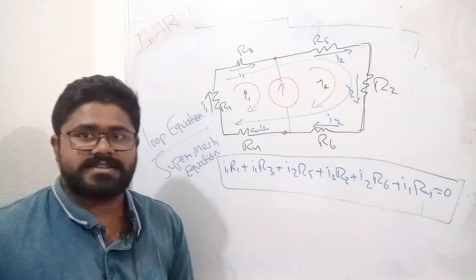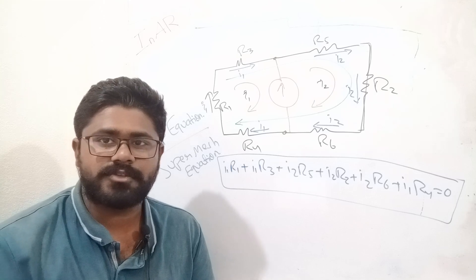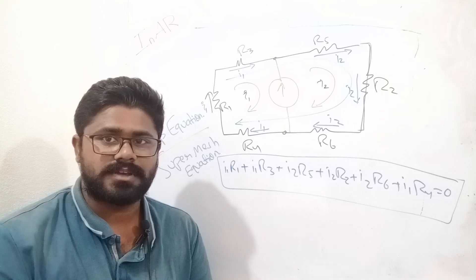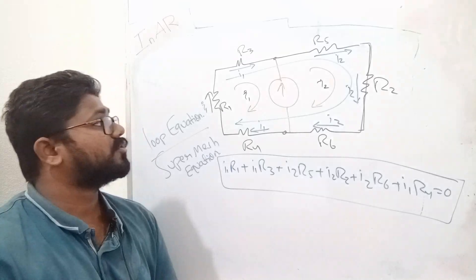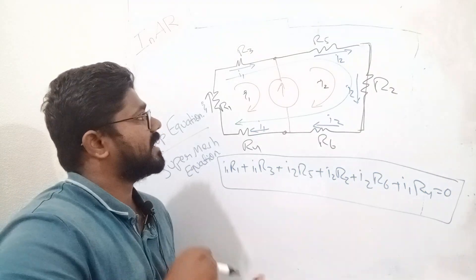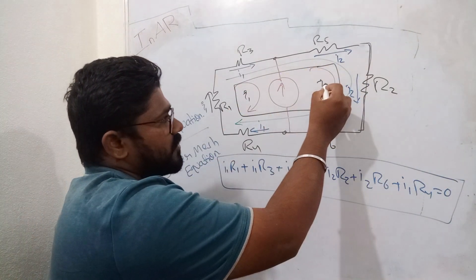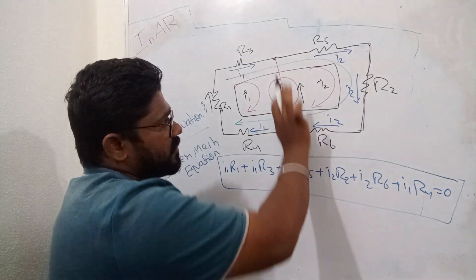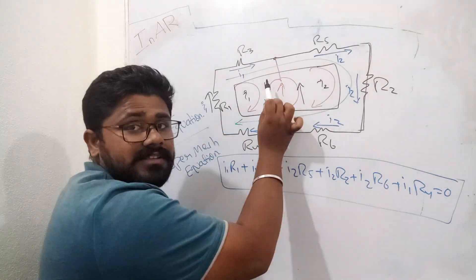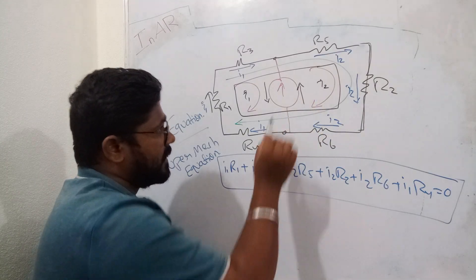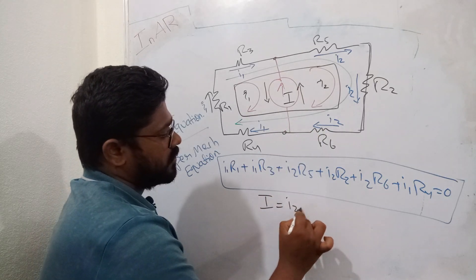We have two meshes, so we have two variables I1 and I2. From mathematics, we know we need two simultaneous equations. The second equation is found by observing the current source: current I2 is entering the current source from one direction and I1 from the other, while the actual current source direction is upward — the same as I2. So we say: current source = I2 minus I1.